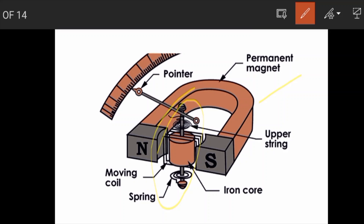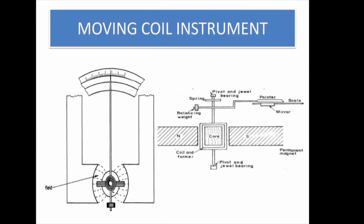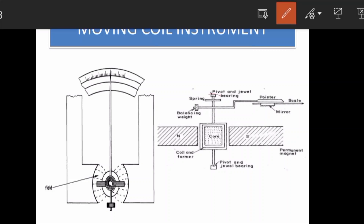The pointer moves across the scale due to deflection torque. There must be an opposing force — the controlling torque — to balance the deflection. This controlling torque is provided by the phosphor bronze spring, which also carries the incoming and outgoing leads of the current.